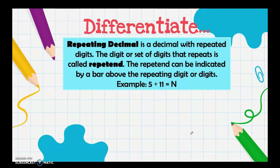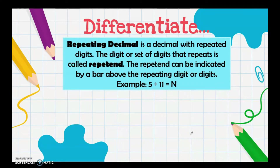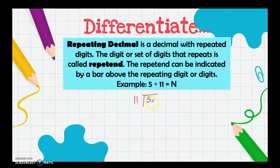Another kind of decimal is a repeating decimal — it is a decimal with repeated digits. The digit or set of digits that repeats is called the repetend. The repetend can be indicated by a bar above the repeating digit or digits. For example, we have 5 divided by 11.